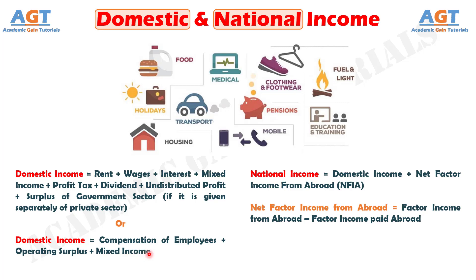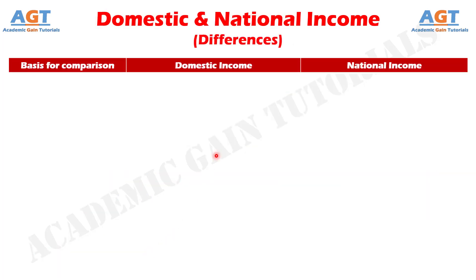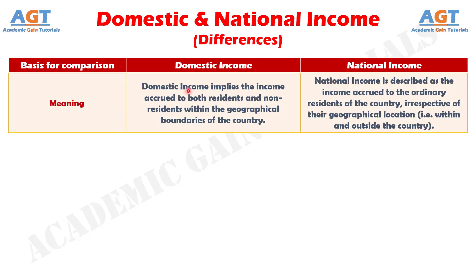Now let's look into the basic differences between domestic income and national income in a tabular form. Difference number one: domestic income implies the sum of all factor incomes earned by various factors of production operating within the geographical boundaries of the country during the course of an accounting year. On the other hand, national income refers to the aggregate of all factor incomes accrued to the country's ordinary residents during the course of a financial year.